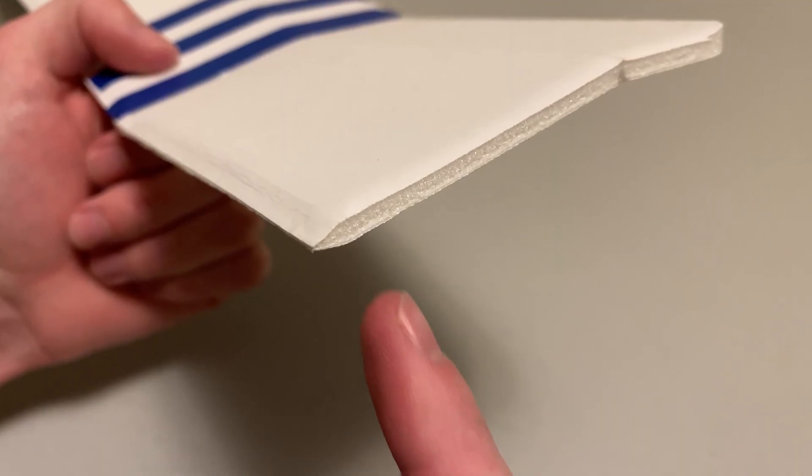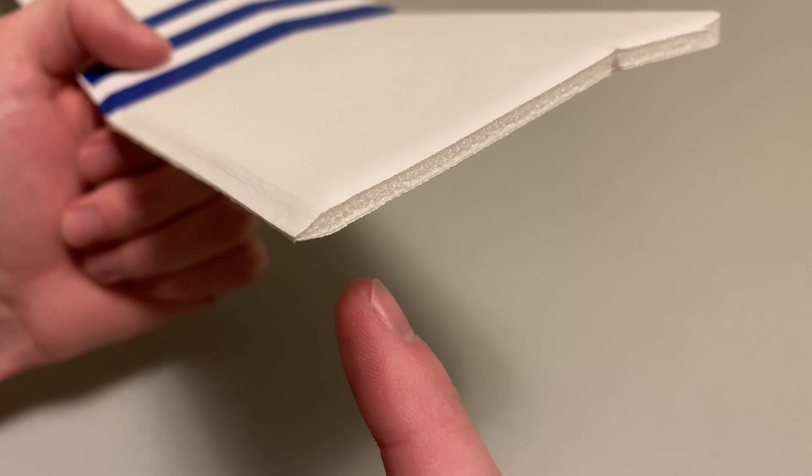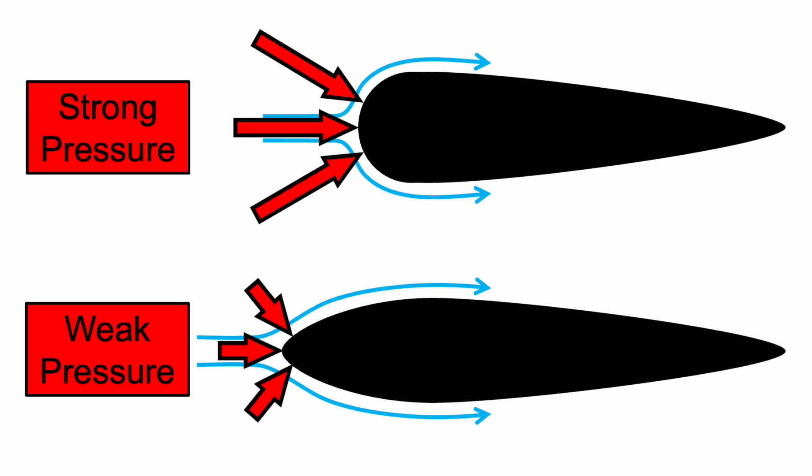The process of changing the shape of an object to reduce drag is called streamlining, and an object shaped to have very little drag is said to be streamlined. This is why we tapered the leading and trailing edges of the wing during the build video. We can also reduce the high pressure at the front by making it less blunt and more pointed like a bullet, so the air flows around it more smoothly and less force is required to deflect it.